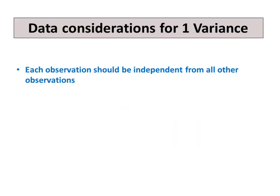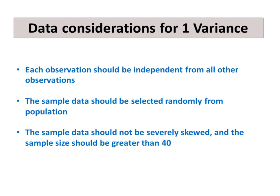To ensure that your results are valid, consider the following guidelines when you collect data, perform the analysis, and interpret your results. Each observation should be independent from all other observations. The sample data should be selected randomly from the population. The sample data should not be severely skewed, and the sample size should be greater than 40.